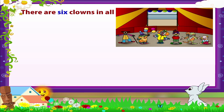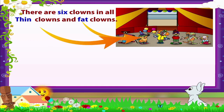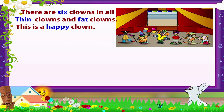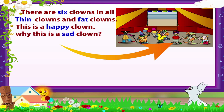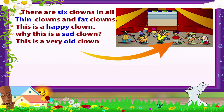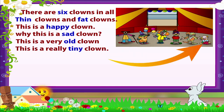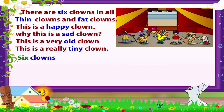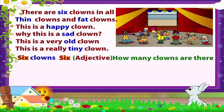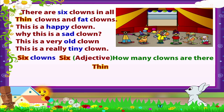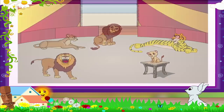Now let's get back to the circus — here come the clowns! All kinds of clowns. There are six clowns in all: thin clowns and fat clowns. This is a happy clown. I wonder why this is a sad clown! This is a very old clown, and this is a really tiny clown. Six is also an adjective, as it tells us how many clowns there are. The other adjectives used to describe the clowns are: thin, fat, happy, sad, old, and tiny.